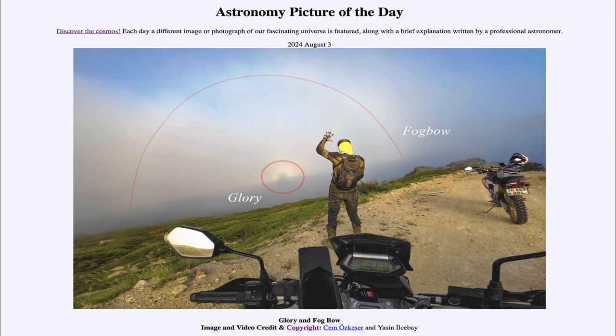Greetings and welcome to the Astronomy Picture of the Day podcast. Today's picture for August 3rd of 2024 is titled Glory and the Fog Bowl.